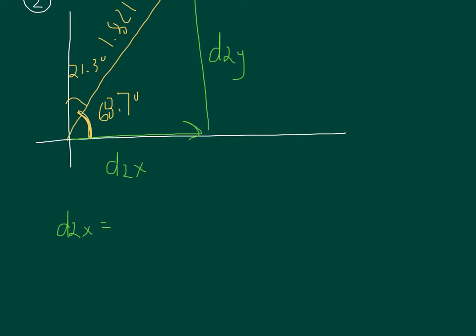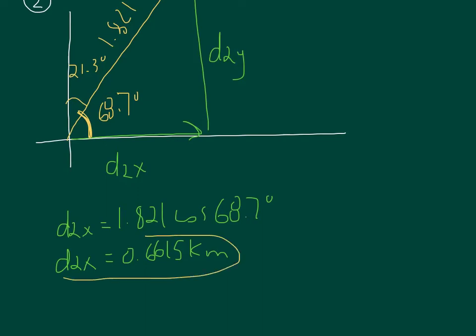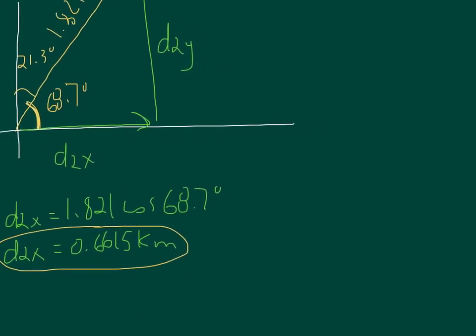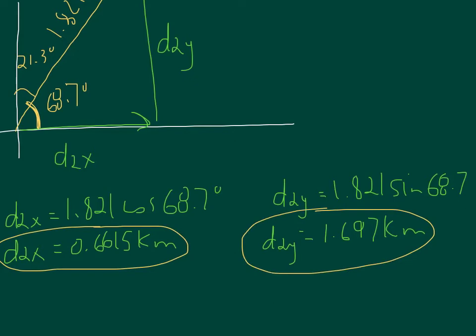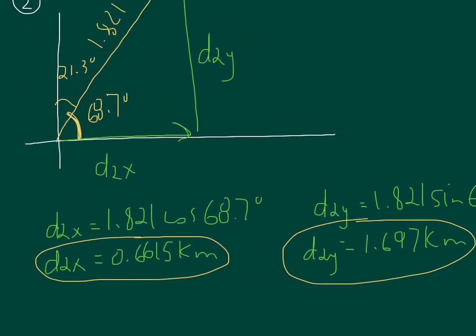D2x is hypotenuse, cosine angle, and that has to be the one inside the triangle. So D2x will be 0.6615. And D2y is 1.821 sine of the angle, 68.7. So D2y will be 1.697 kilometers. So we now have the x and y components for the second vector.